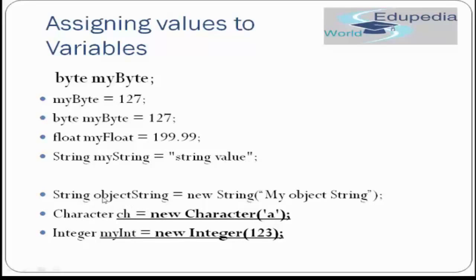The example below shows how we can create a string object. String is the class name, then there is the object name, equals to new String, and then we pass the value to initialize the string object. The difference between the two: the first one creates a string literal, while the second creates a string object and a literal. The literal is the string value and the object created is called objectString. We will study the details of string literal vs string object in a later tutorial.